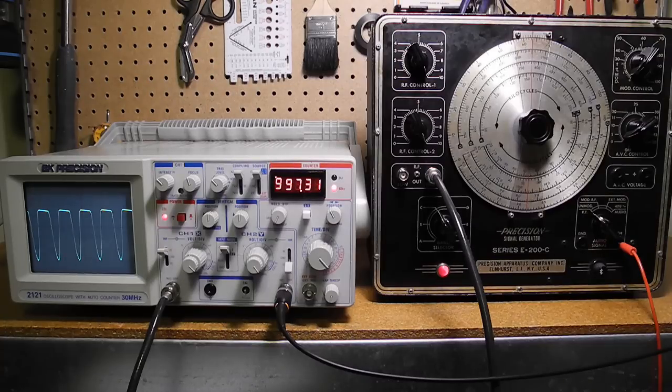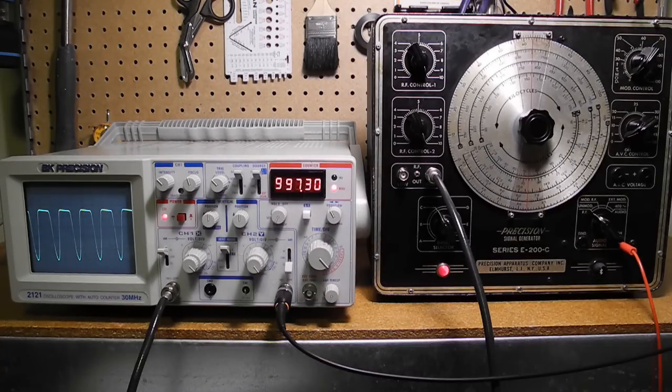Let's see a demonstration of the unit operating. I've connected the output to an oscilloscope so we can visually see it. We're now looking at the RF output on range C at approximately one megahertz.